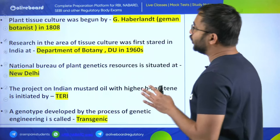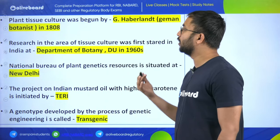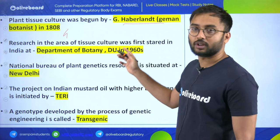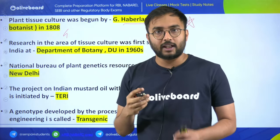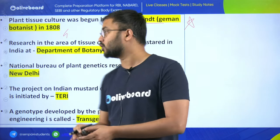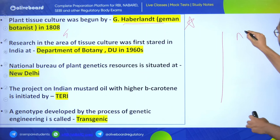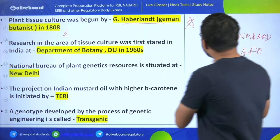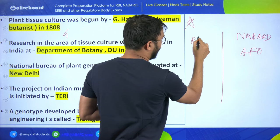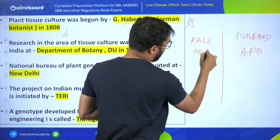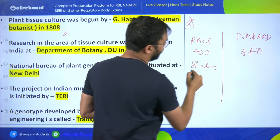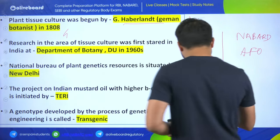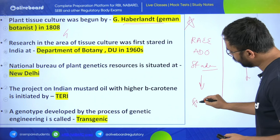Plant tissue culture was begun by Haberlandt in 1808. Such factual questions you should definitely know about. Categorizing exams: NABARD and AFO fall into one category, while all RIO, ADO, and other state agriculture exams fall into another. Static one-liner questions are asked in all exams, but NABARD and AFO are more factual and static in nature, while state exams are both conceptual and static.